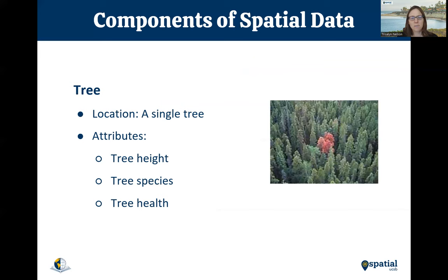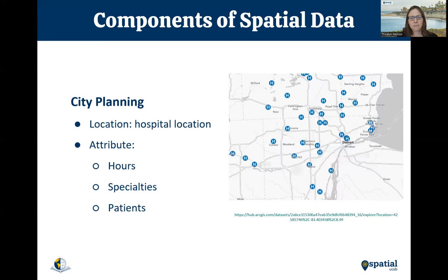One of the things I love to talk about is forestry, because I did some of my graduate work in forestry. We'll often map things like the location of an individual tree — here, this is a red tree that is diseased — and we might also collect other things about it. So its XY coordinate makes it spatial, but we might be interested in its species, its height, and its health. In city planning, there are great examples of spatial data use. Here we might have hospital locations — and the location is interesting, but you also want to know the hours, the specialties, and how many patients or empty beds there are.